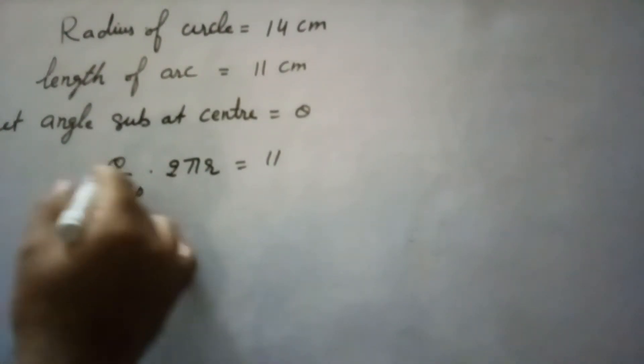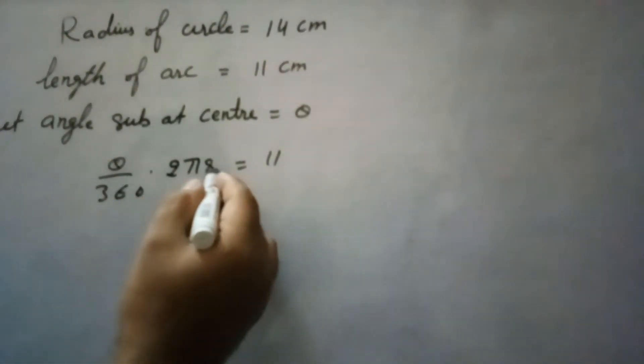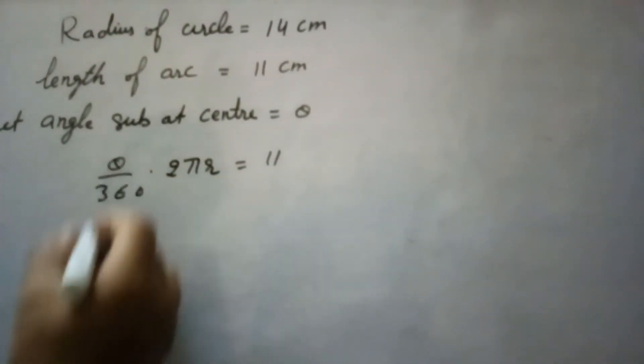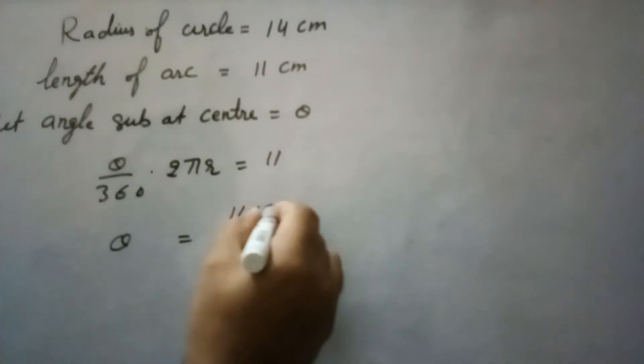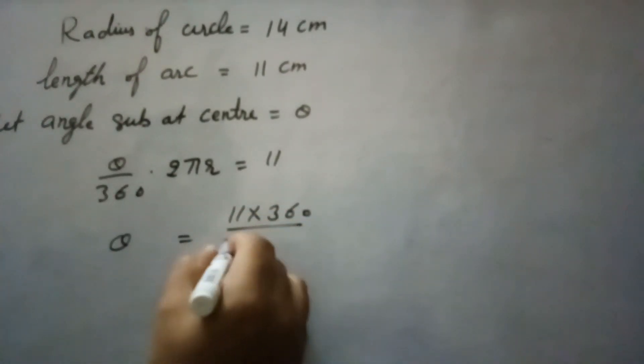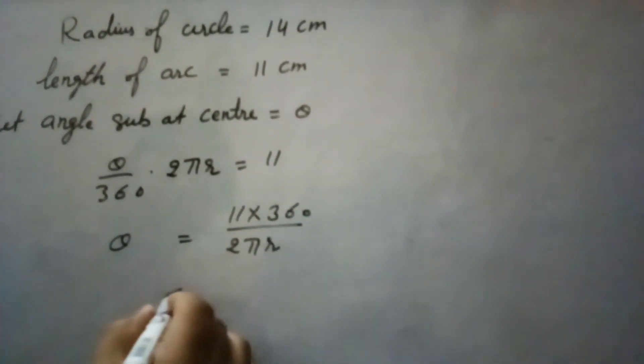Now, we will calculate this. Because pi is given as 22 by 7 and our radius is given, we can calculate theta which equals 11 into 360 over 2 pi r. We can calculate this theta from here.